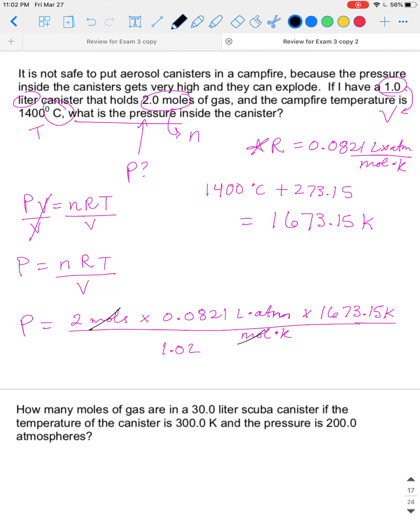Cross out units, moles on top, moles on bottom, liters on top, liters on bottom, Kelvin on top, Kelvin on bottom. We are left with ATM, which is what we want for pressure.